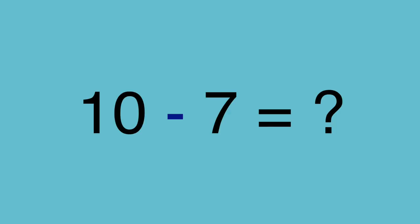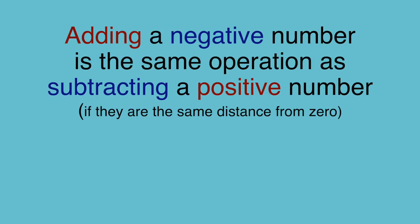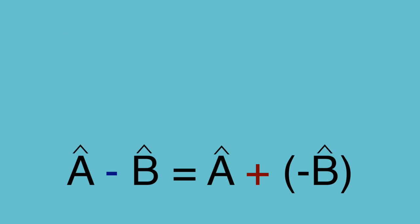What do you get when you take 7 away from 10? You get 3. How about when you add negative 7 to 10, like this? You get the same answer, right? That's because adding a negative number is the same as subtracting a positive number, assuming they are the same distance from zero. While this may seem arbitrary at first, it's actually the exact formula we need to subtract two vectors correctly.